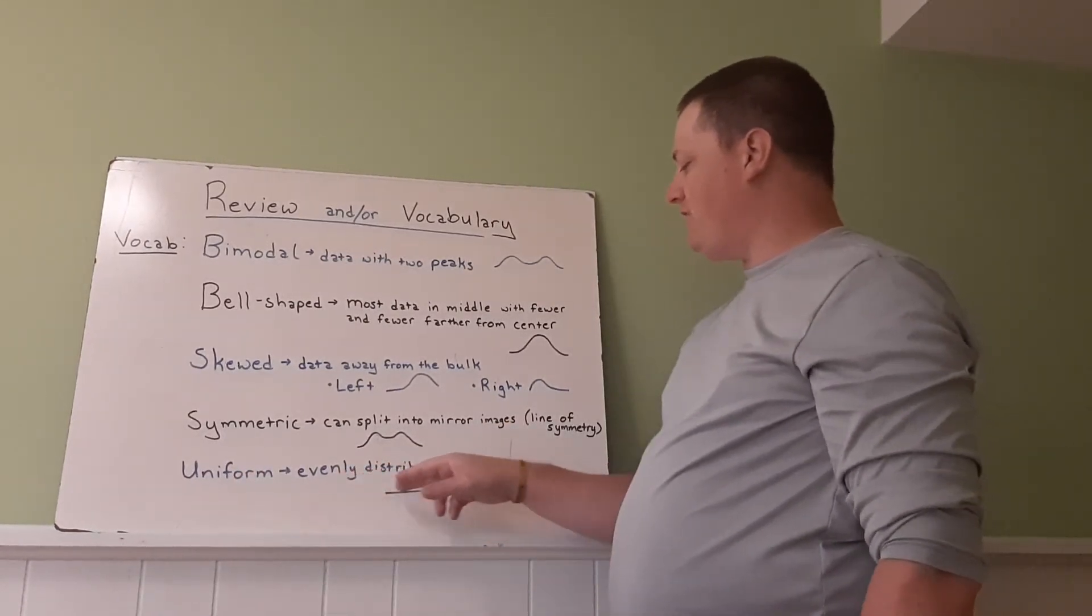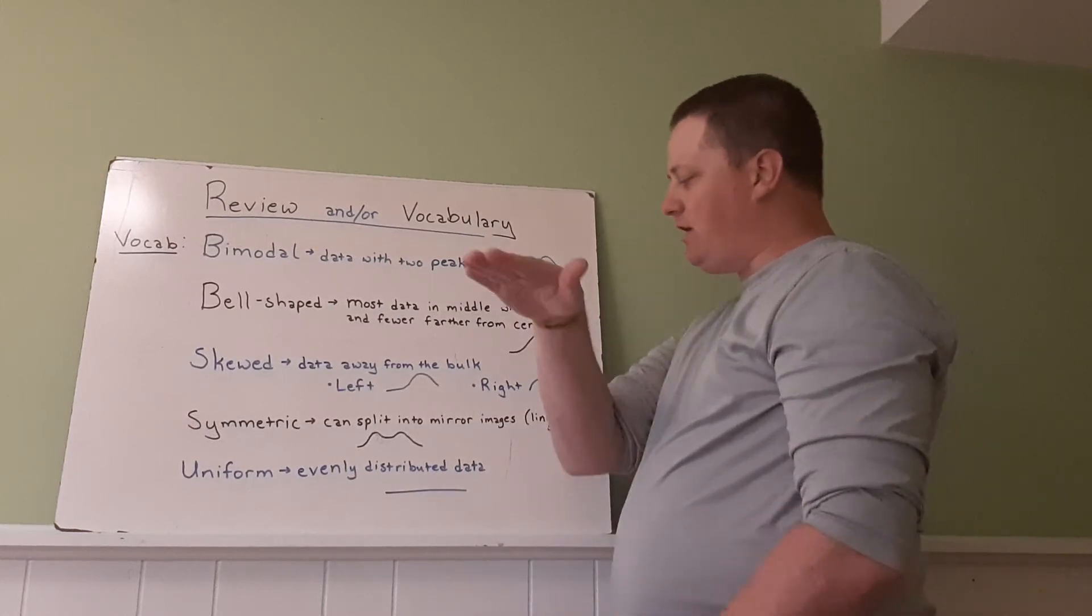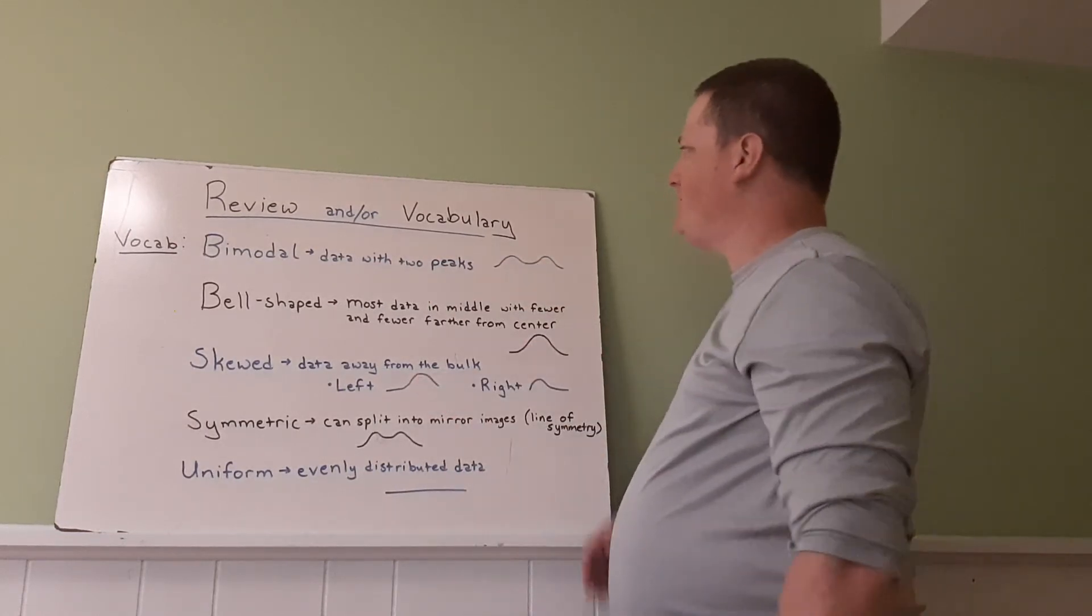Uniform is evenly distributed data. Basically, you can draw a line over it and it'll be straight horizontal.